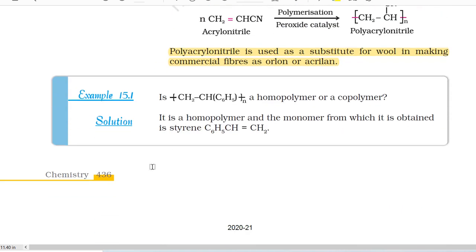Example 15.1. Is (CH2CHC6H5)n a homopolymer or a copolymer? Solution. It is a homopolymer and the monomer from which it is obtained is styrene, that is C6H5CH=CH2.